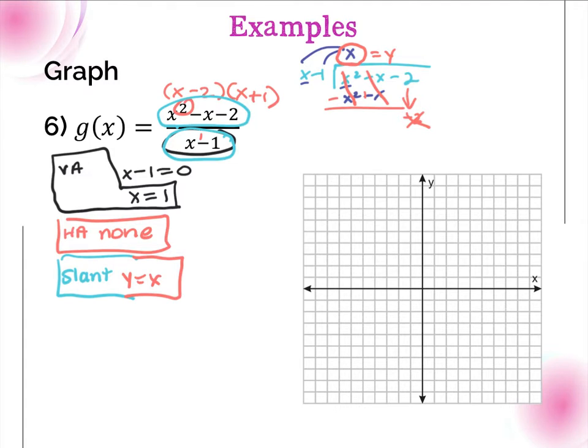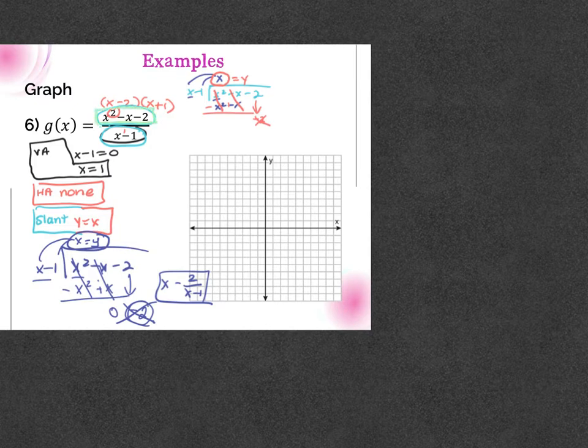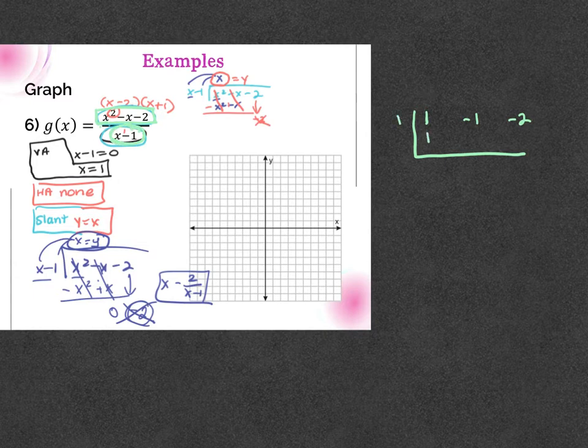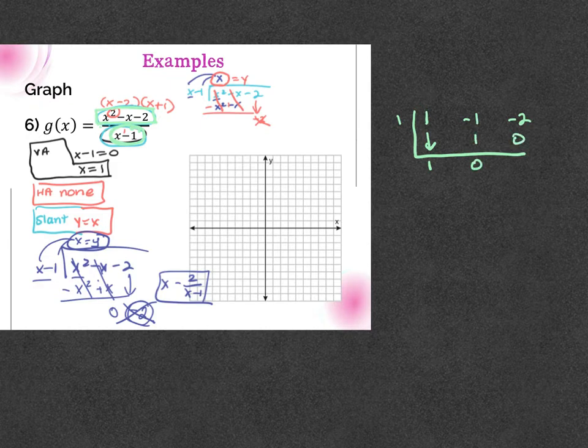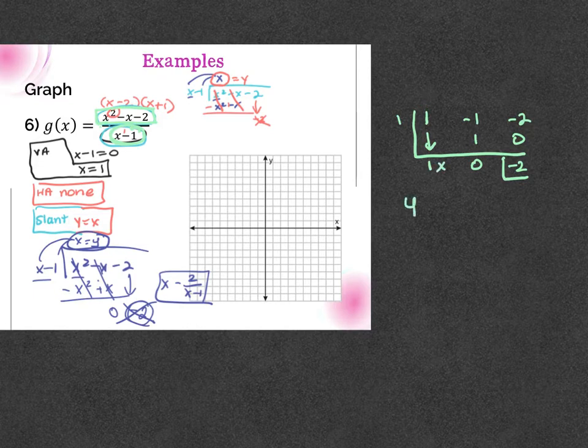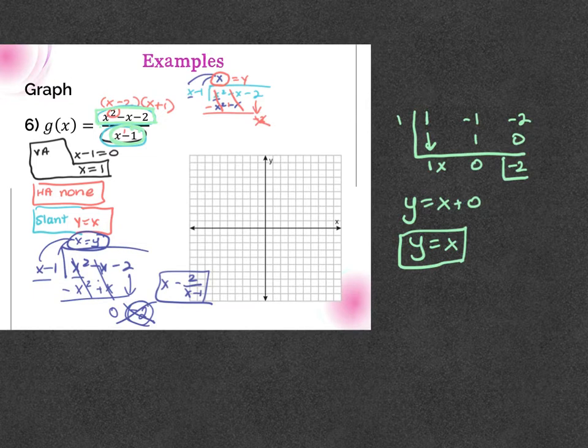If I wanted to divide this synthetically, because I can, I make sure this is in decreasing degree order, and it is. I write out the coefficients, or the constants. I draw my little L, I put the opposite of what follows x on the outside, so the one goes on the outside. Bring down the one, multiply it, put it in the next column, add it, multiply it, put it in the next column, add it. The last number is my remainder. Where the zero is would be my constant, but it's zero this time. The one gets the x, so I get y equals x plus zero, or y equals x for the slant asymptote. You can ignore the remainder for the slant asymptote.